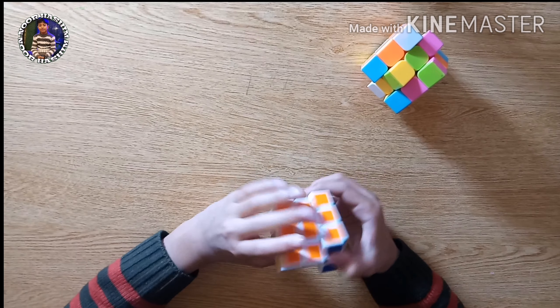So guys there is also a standard combination of the colors like red is always opposed by orange as well as green is always opposed by blue and yellow is always opposed by white. So this was all the basics about the Rubik's Cube.